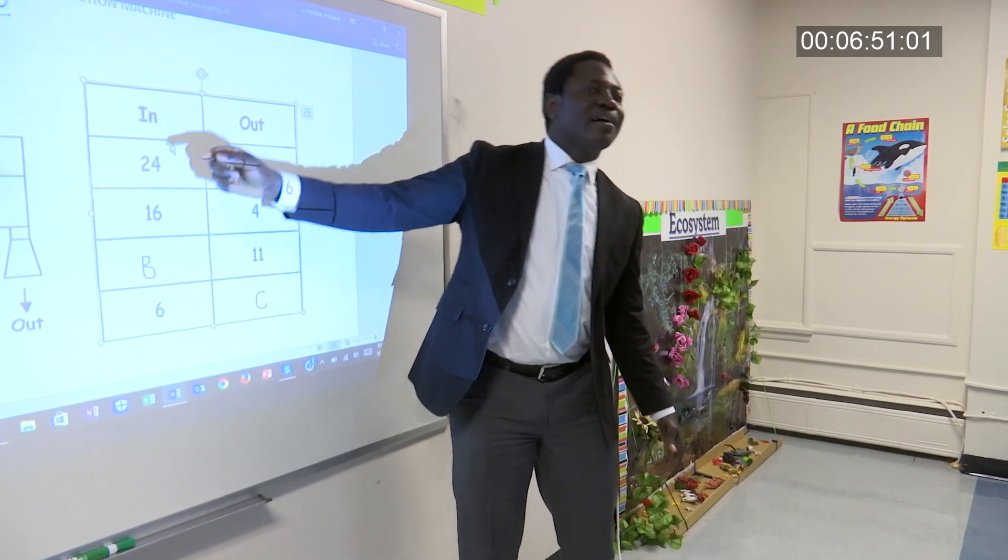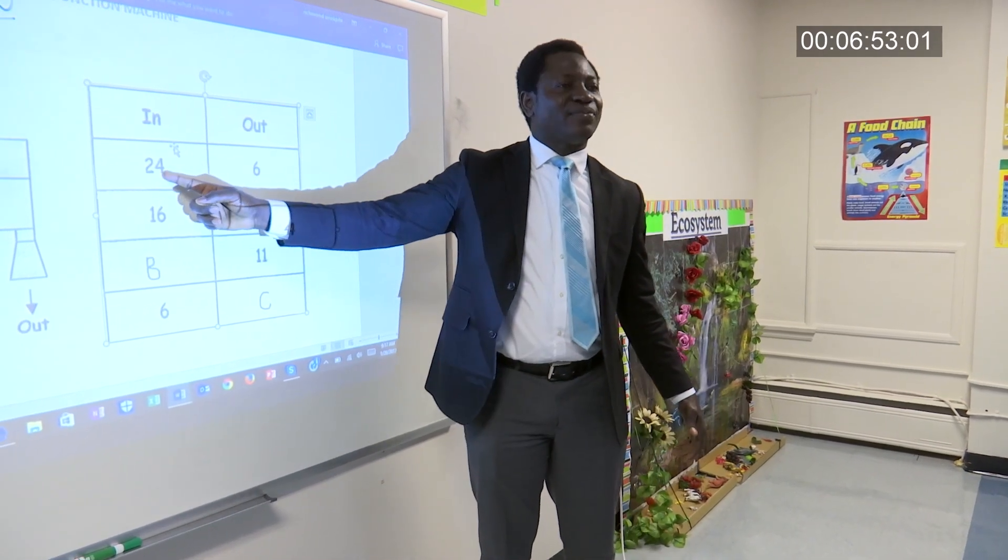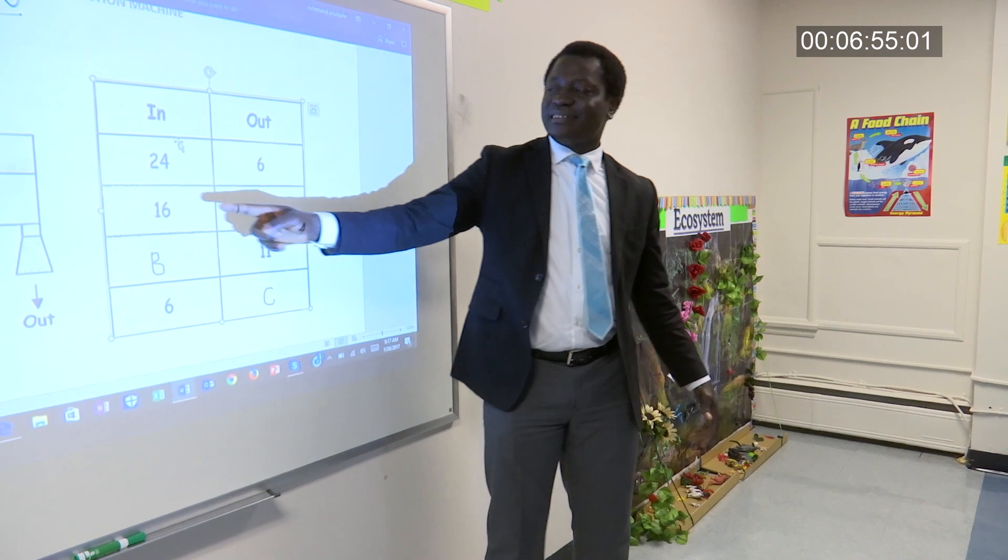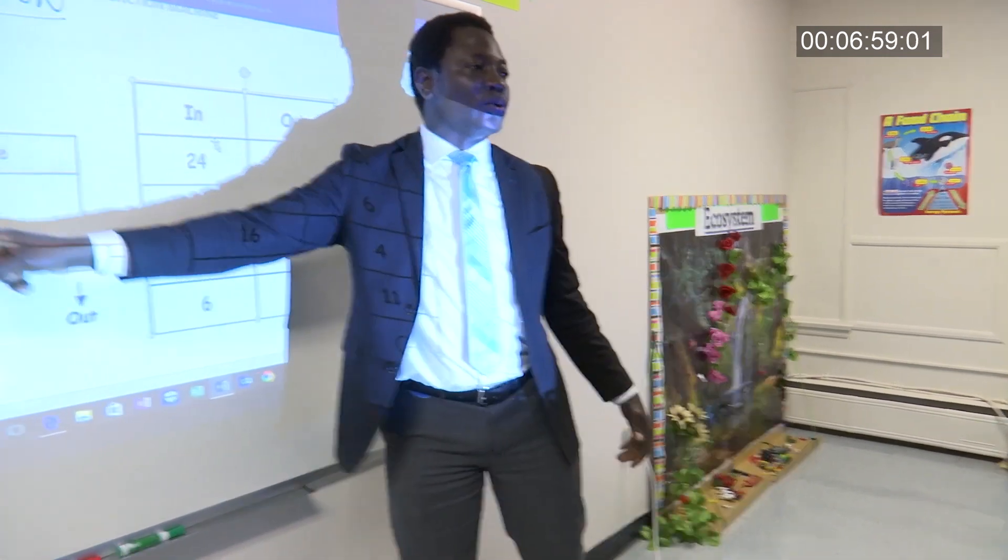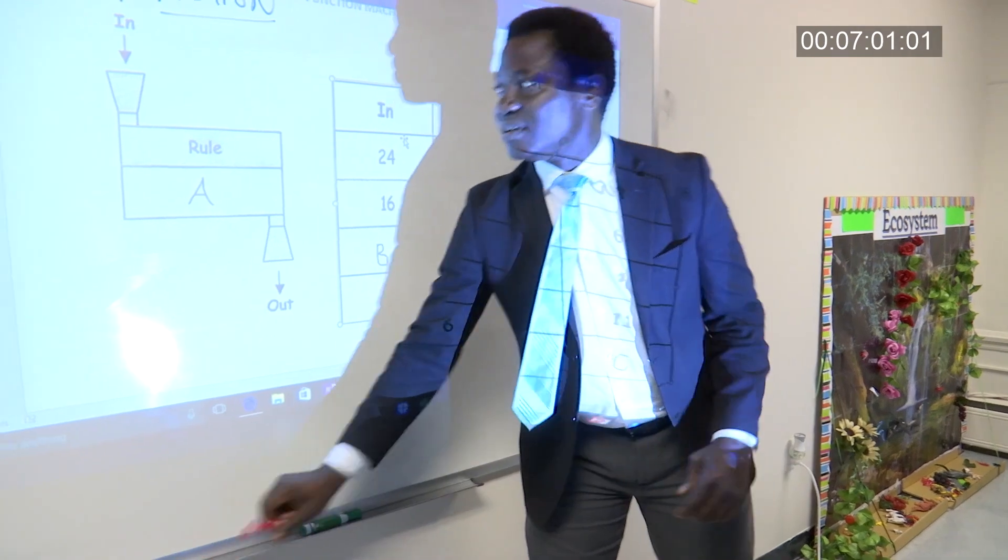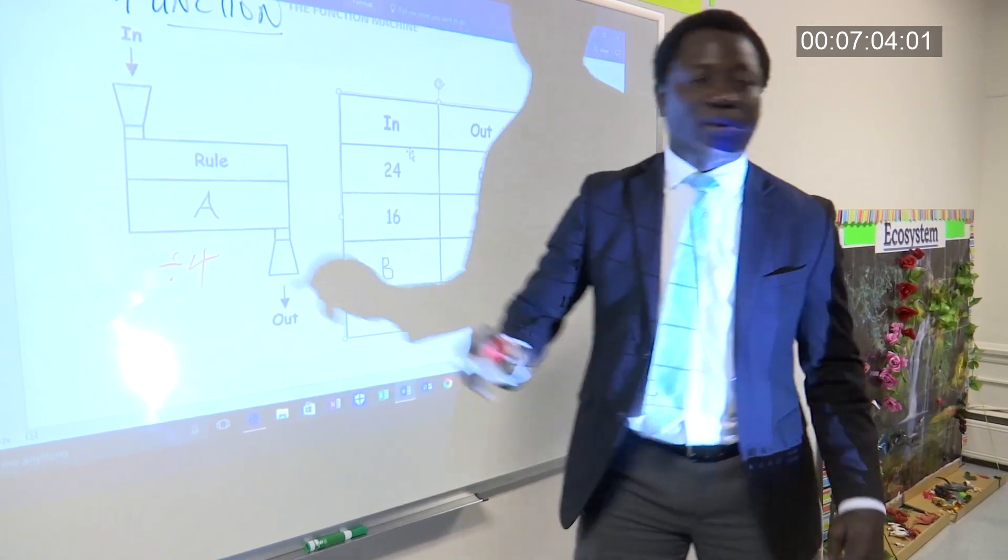24 divided by 4 is 6. 16 divided by 4 is 4. So, what is our rule? So, what is our rule? Divided by 4. Divided by 4. Divided by 4.